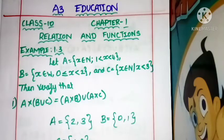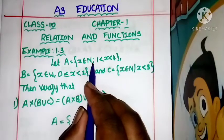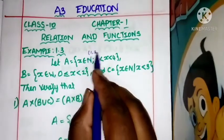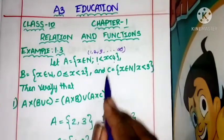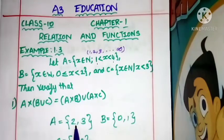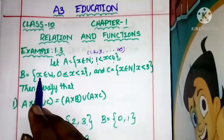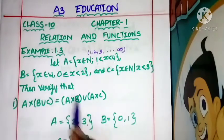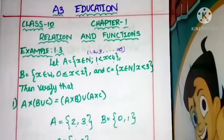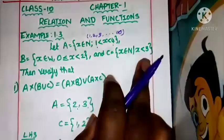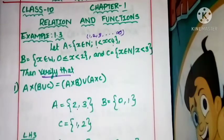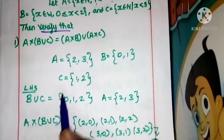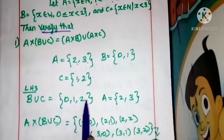This is A3 Education, Class 10, Chapter 1: Relations and Functions, Example 1.3. A is equal to x belonging to natural numbers, so A = {1, 2, 3, ...}. B is equal to x belonging to all numbers where x equals 0 or 1. C is the set of natural numbers x such that x is less than 3, so C = {1, 2}. We will now verify A union B.